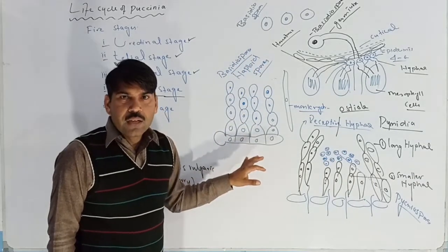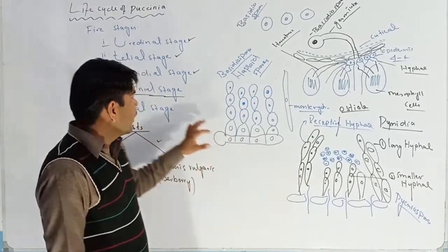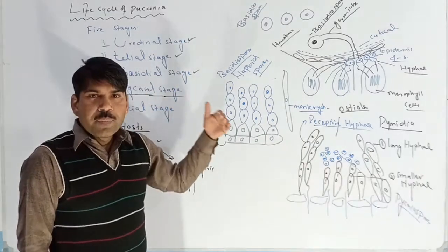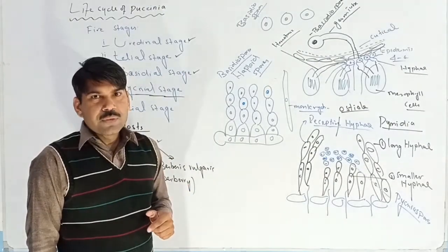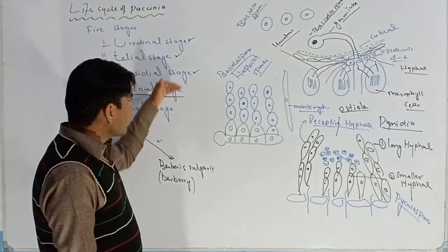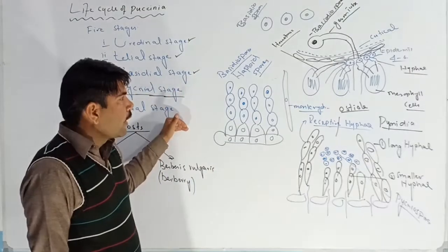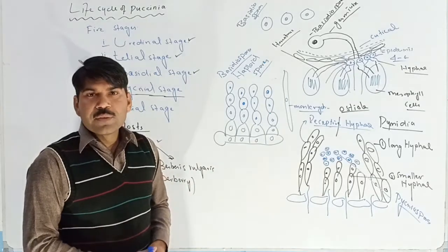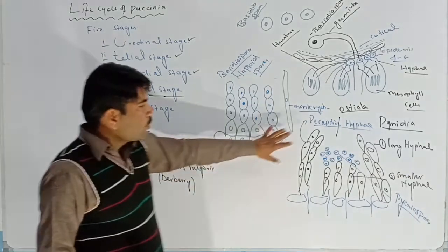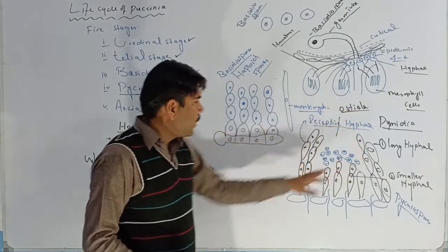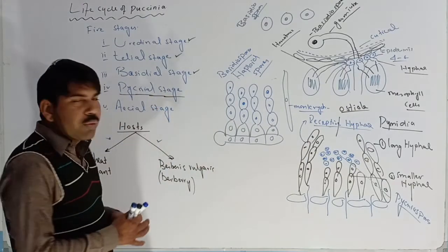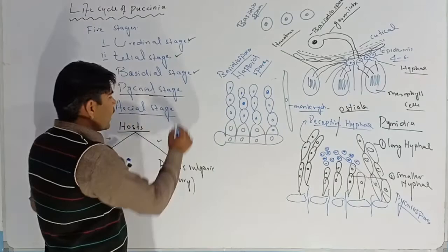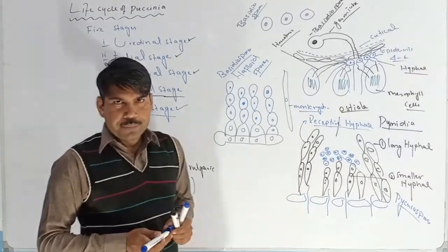In the life cycle of Puccinia, the first three stages complete in the first host, the wheat plant, while the other two stages complete in the second host, the Berberis plant. After the pycnial stage, we now discuss the next stage, which is known as the aecial stage.